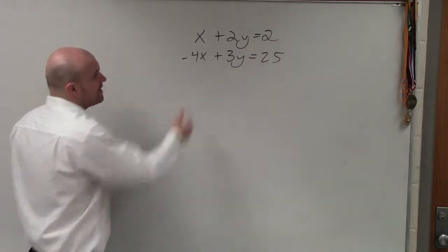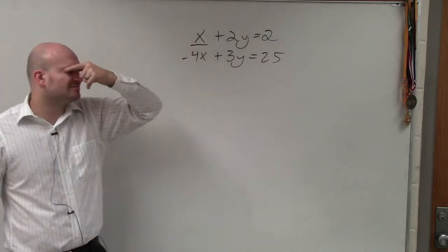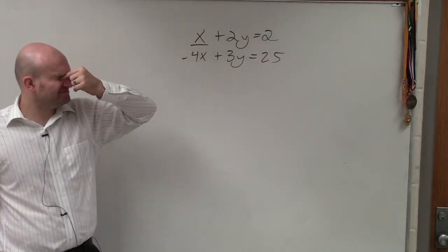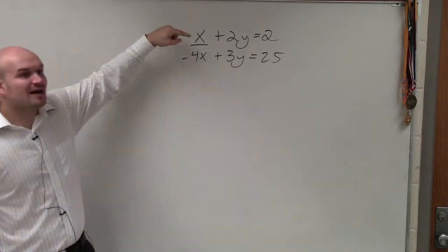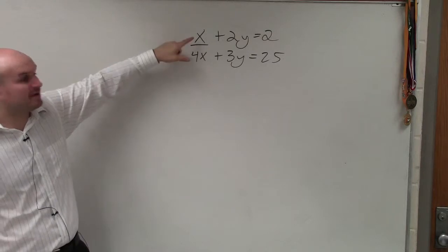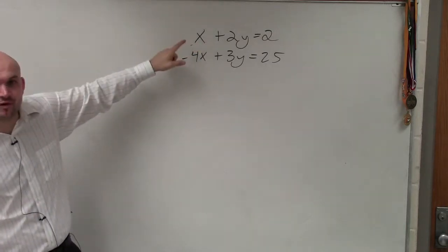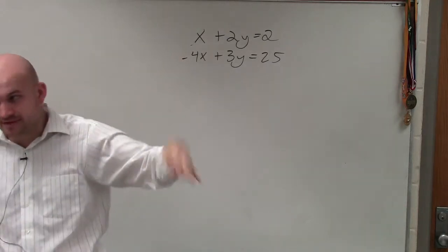You guys notice here, I have a variable that is isolated, it's by itself—or it's not isolated by itself, but it only has a coefficient of 1. So when I have a variable that has a coefficient of 1, I prefer using the substitution method.